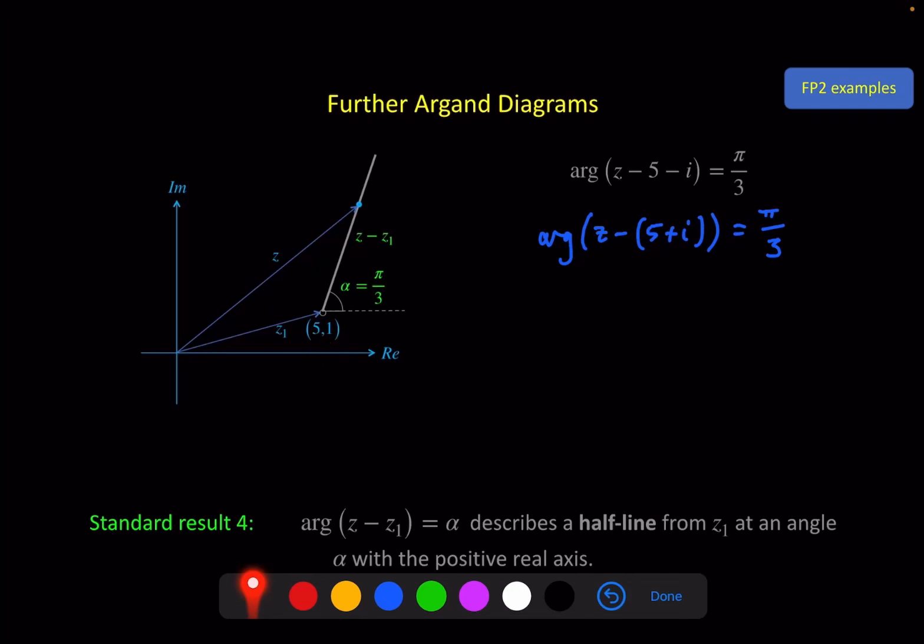We can apply the same algebraic method, putting in x plus yi for z, collecting real and imaginary parts, and then manipulating it to get a Cartesian equation of this half line. But I'm not going to do that in this example because this process takes a little bit longer with the arguments, so I'll leave that for the examples at the end of the video.